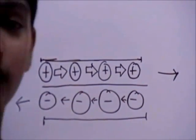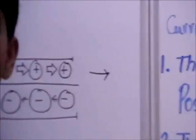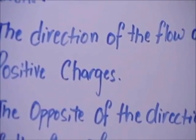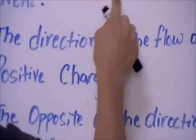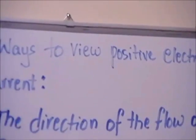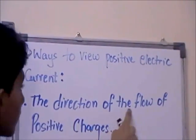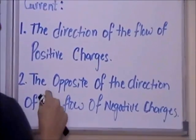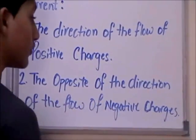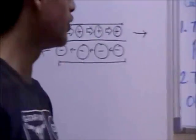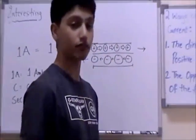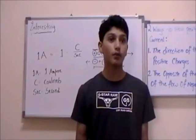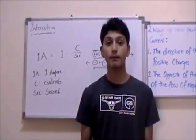Before we end this section, there are two ways that we discussed to view positive electric current. The first way is the direction of the flow of positive charge. The second is the opposite of the direction of the flow of negative charges. Using these two ideas, we can figure out the direction of either of those subatomic particles.